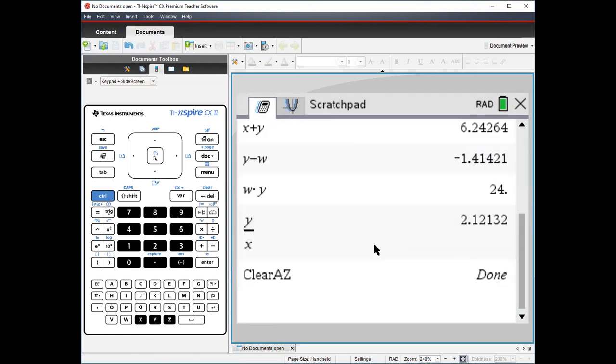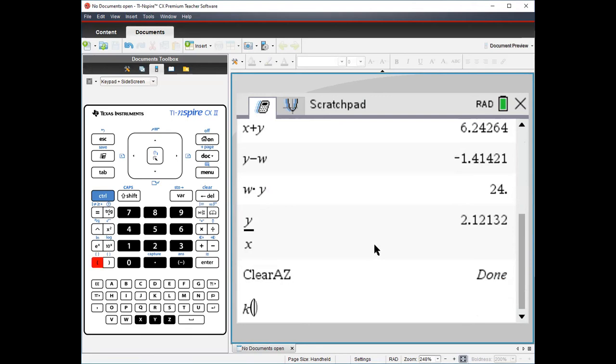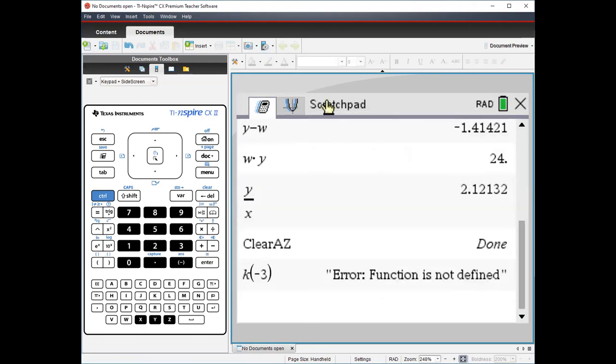Now if I go back and want to know what k(-3) is, it's going to say it has no idea because it doesn't know what k is anymore. That clears the table for putting in new variables. Hopefully you understand a bit about how variables work and how to use them to help you solve certain problems on the Regents exam.